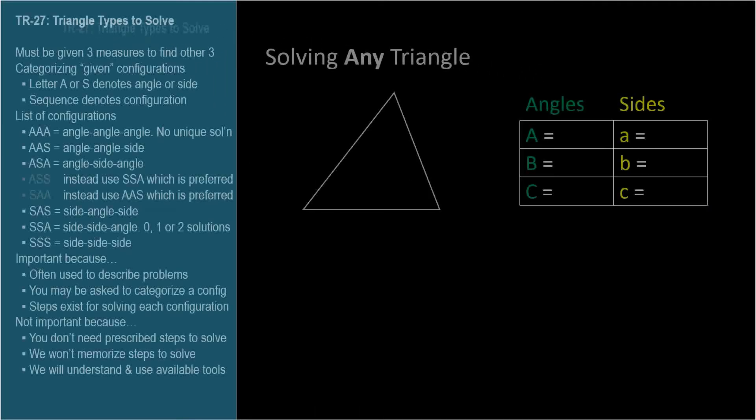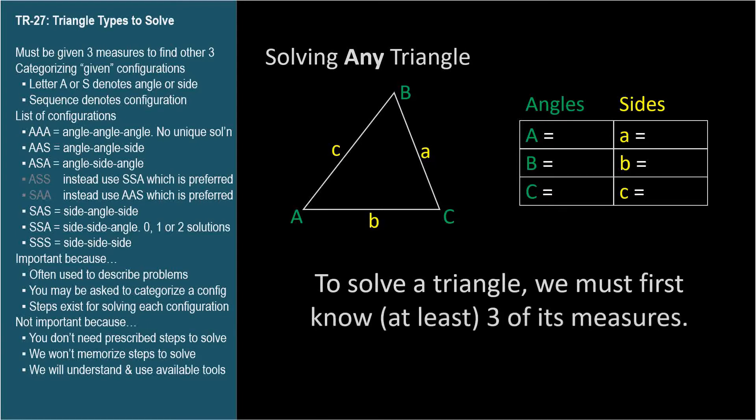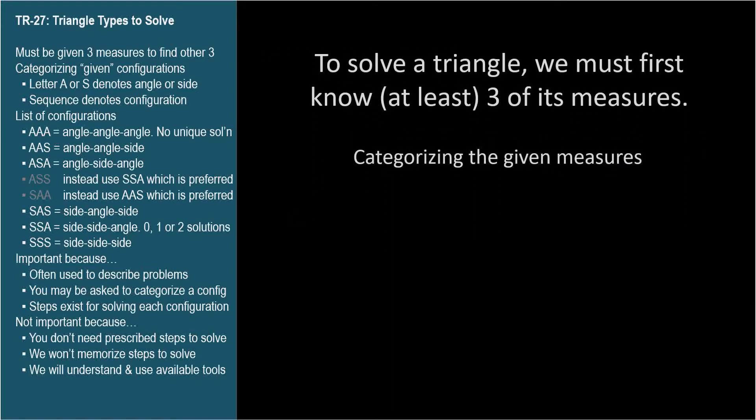Solving a triangle means knowing all six of its measures, three sides and three angles. Now we're going to focus on the more general triangle that might not be a right triangle. We still need three pieces of information to start. The combination of measures we're given determines the category or configuration of the problem.